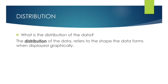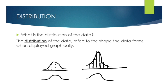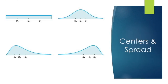Distribution refers to the overall shape that the data forms when displayed graphically. Last time we talked about dot plots — if we have observations and connect the top values, it can make a bell shape. With a histogram, we locate the middle of each bar and connect them to get the shape of the distribution. These shapes make up the spread or distribution of the data.